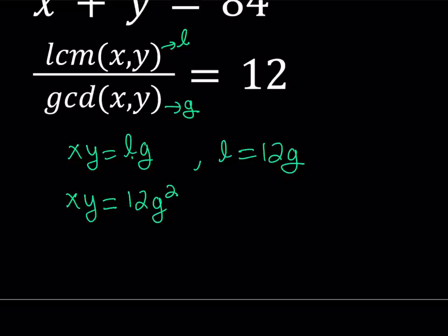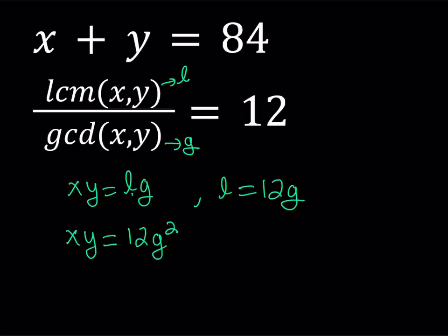This is one fact that we can derive, but we didn't use any of the givens yet. We're also given that the L to G ratio is equal to 12, which is kind of nice. So that means that I can write L as 12G.